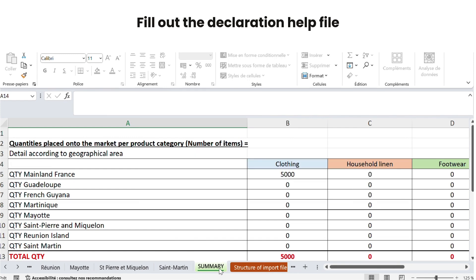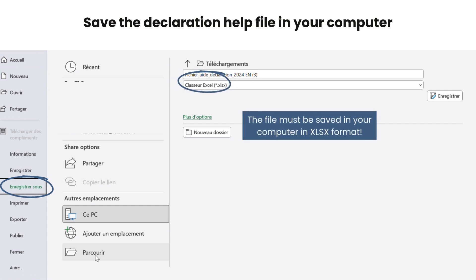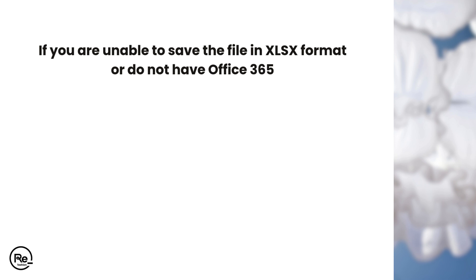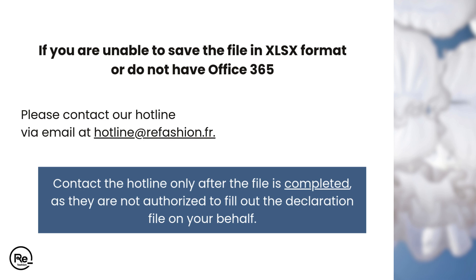The table updates automatically and requires no additional action from you. It is useful for verifying your total declared quantities and assessing the status of your declaration. Once you have completed your file, save it on your computer in xlsx format, as this is the only format that can be uploaded on the extranet. If you are unable to save the file in xlsx format or do not have Office 365, please contact our hotline via email at hotline@refashion.fr. Contact the hotline only after the file is completed, as they are not authorized to fill out the declaration file on your behalf.